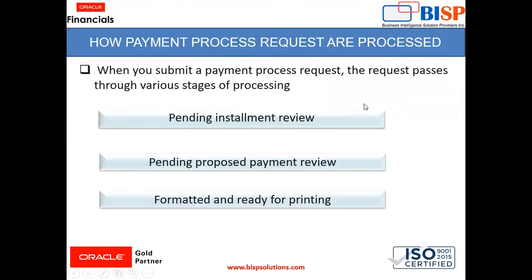When you submit a payment process request, the request passes through various stages of processing like pending installment review, pending proposed payment review, then formatted and ready for printing. These are the stages through which our payment gets processed in the application.